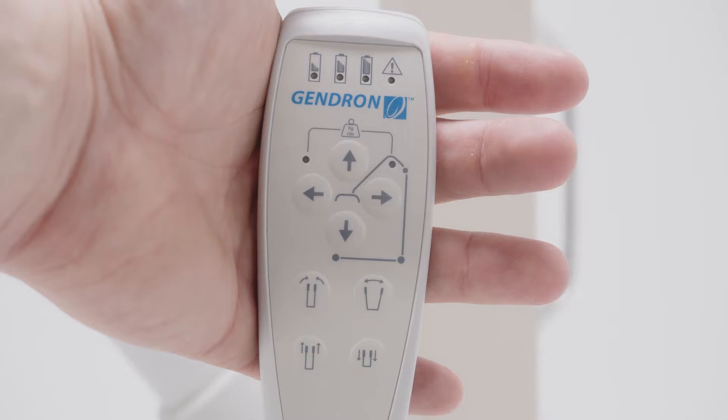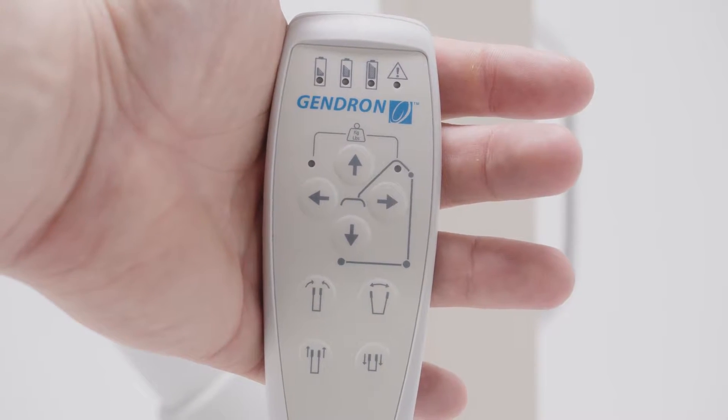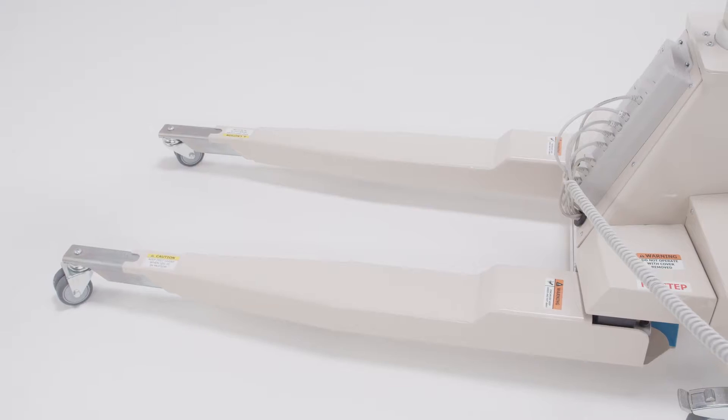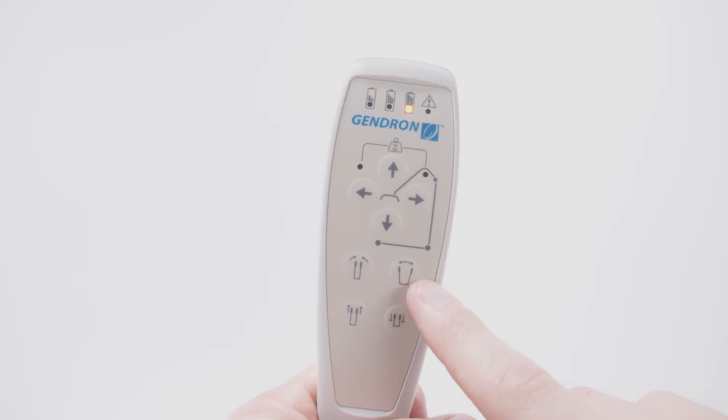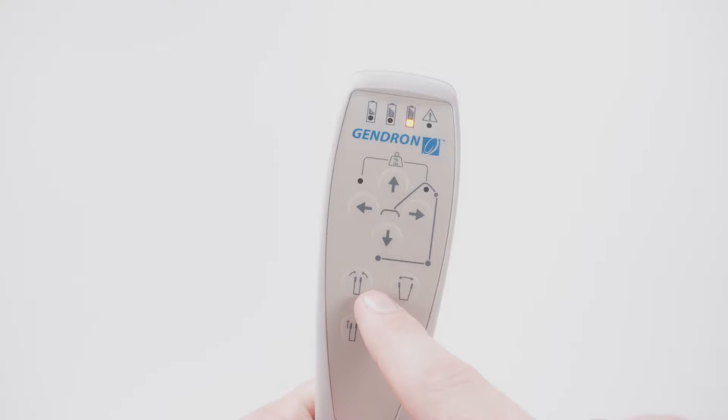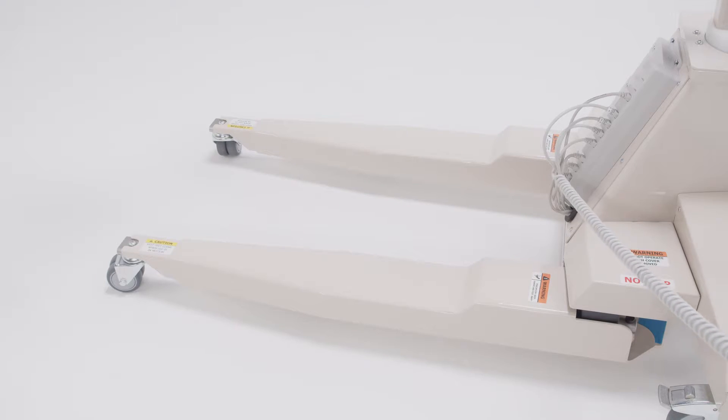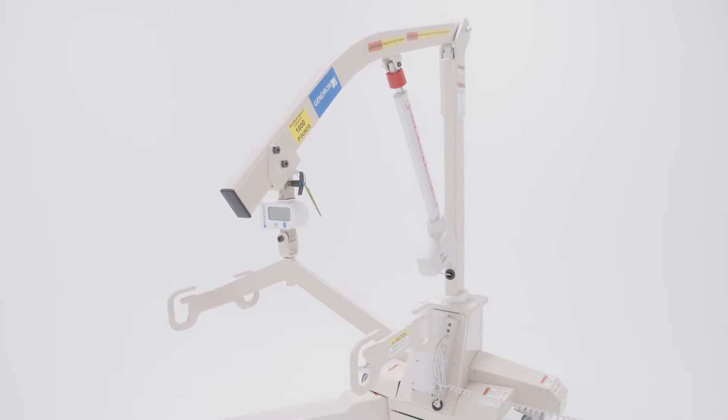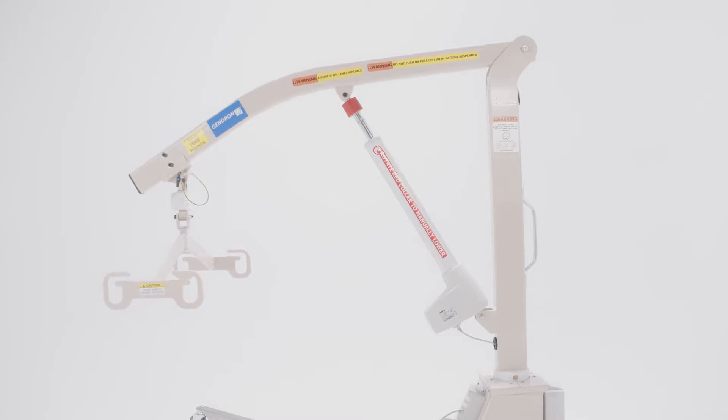The hand pendant controls all functions of the lift, including extending and retracting the legs, the opening and closing of the base, rotational movement, and the lowering and lifting of the mast.